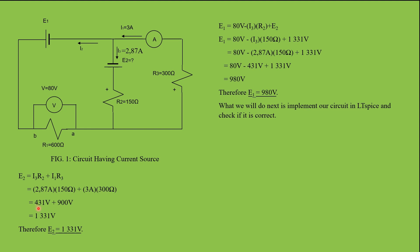That is equal to 431 volts plus 900 volts, which equals 1,331 volts. Therefore E2 is equal to 1,331 volts. E1, on the other hand, is 80 volts minus I3 times R2, because of the chosen convention for the direction I3 flows, plus E2.